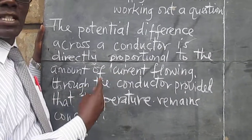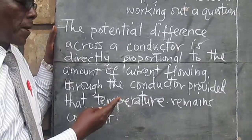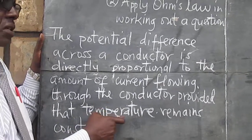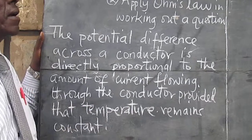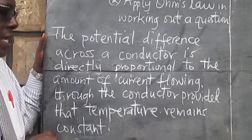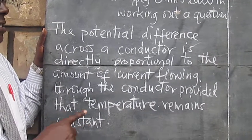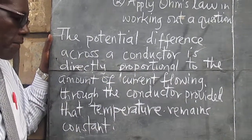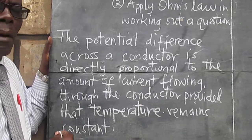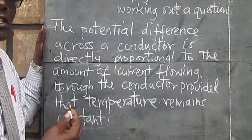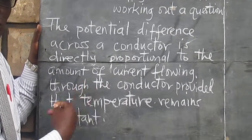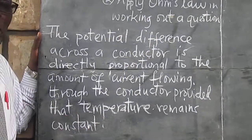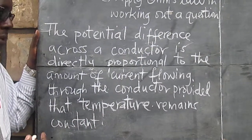Among the other physical conditions, temperature is the most important, and that's why we have mentioned it here. From here we realize that this is a case of direct variation, and therefore we can apply our mathematical know-how in getting a formula — a mathematical formula representing Ohm's law.